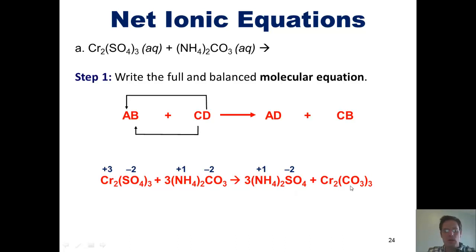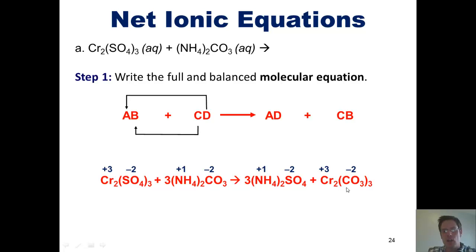Carbonate has a charge of −2, and chromium in this example has a charge of +3. In order to balance charges, we need two chromiums, each with a +3 charge, bonded together with three carbonates, each with a −2 charge, giving an overall negative charge of −6 and an overall positive charge of +6.